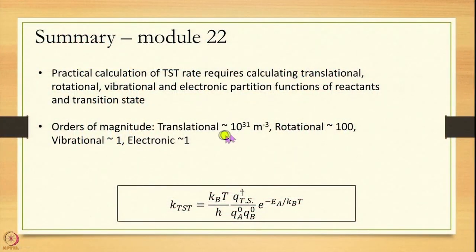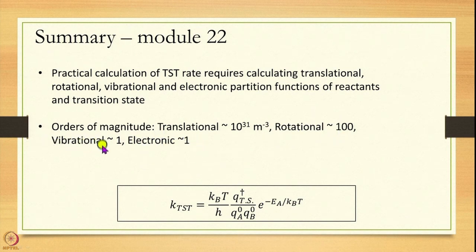To summarize: we examined the general discussion of how to calculate the TST rate constant, checked units carefully, and looked at orders of magnitude. Key values to remember: translational partition function ~10³¹ m⁻³, rotational ~100, vibrational ~1–10, electronic ~1. This is the formula used for calculating rate constants, and in the next module we will study a concrete numerical example.